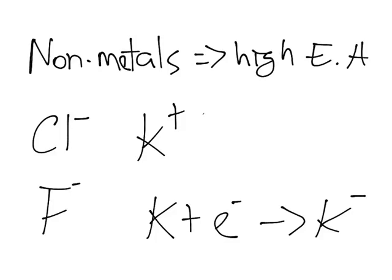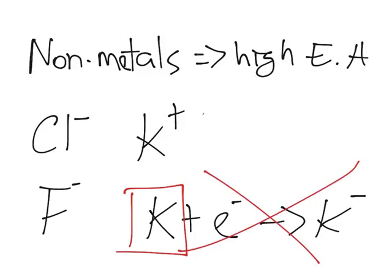So that means that this element, potassium, doesn't have a very high electron affinity, so that means this doesn't happen, so low electron affinity.